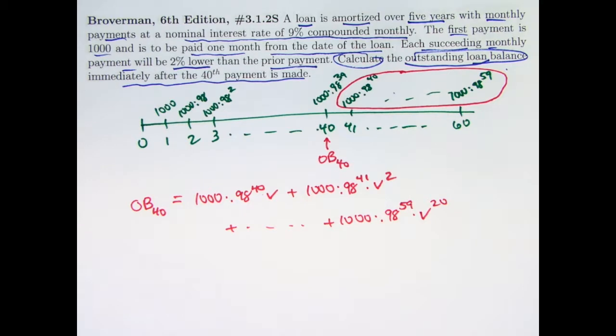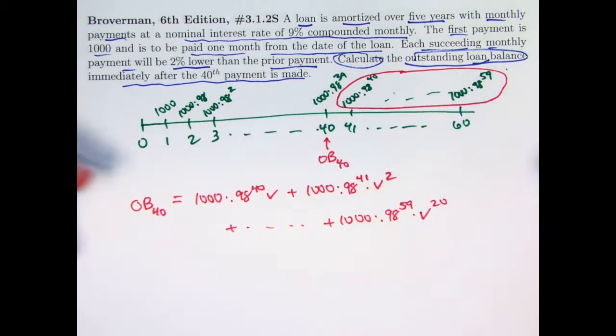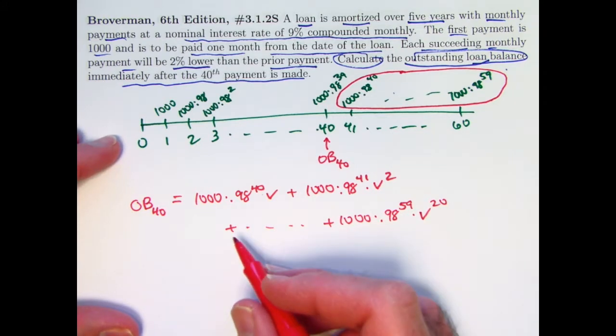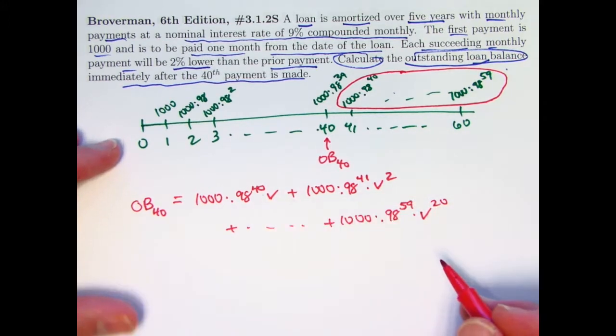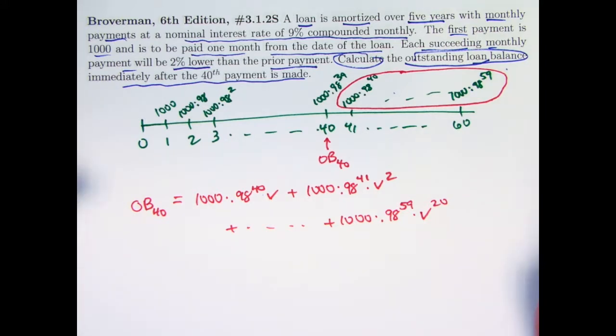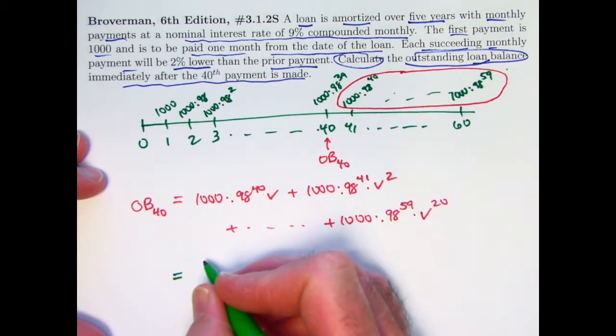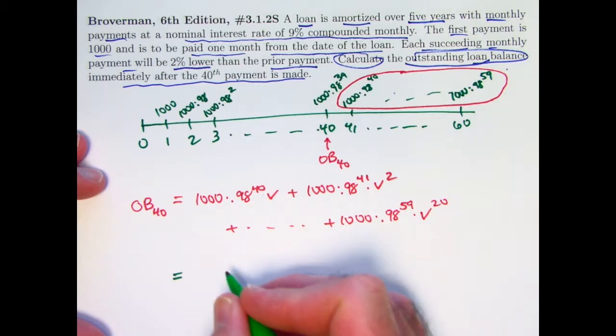This is, not only do the payments form a geometrically decreasing sequence, but the present value sum forms a geometrically decreasing sequence - the terms do at least, it's a geometrically decreasing series, a finite one. And therefore you can find that present value by using the formula for such a finite geometric series.